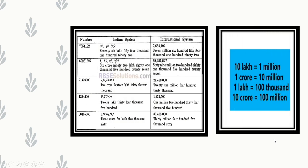Let us see Indian and International systems using examples. We are given the number 7,654,192. In the Indian system, starting from the right, after three digits we put a comma, then for every two digits we put a comma — reading it as 76,54,192. Whereas in the International system, starting from the right, for every three digits we put a comma — reading it as 7,654,192.